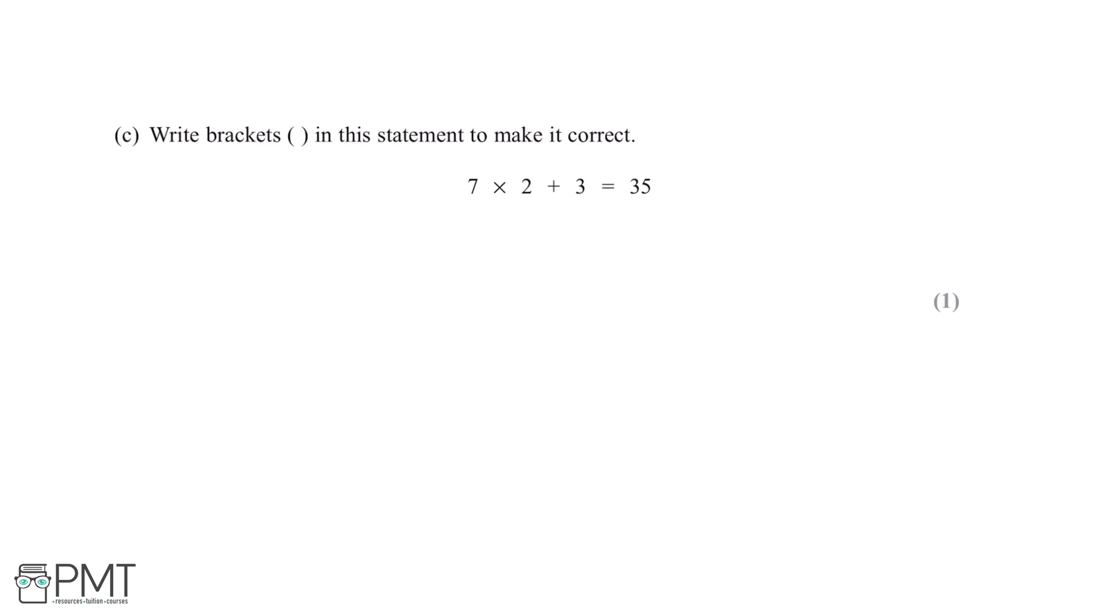If the number which we're multiplying the brackets by is 7, then 7 multiplied by 5 gives us 35.